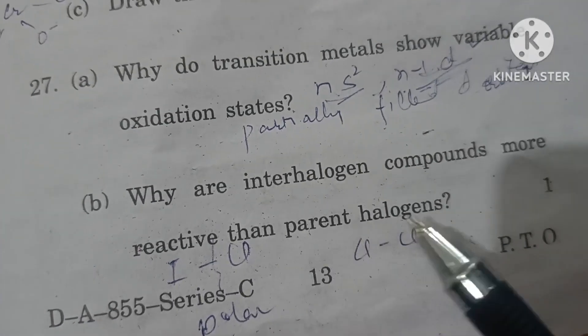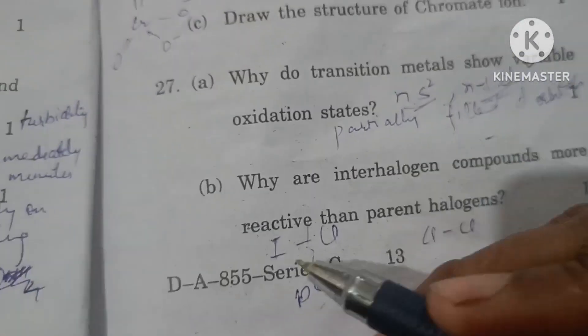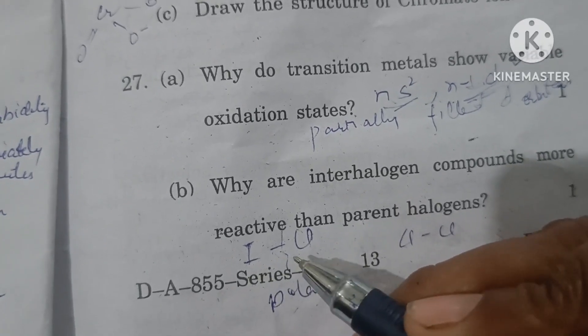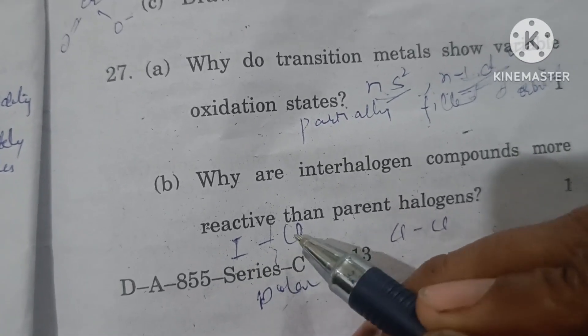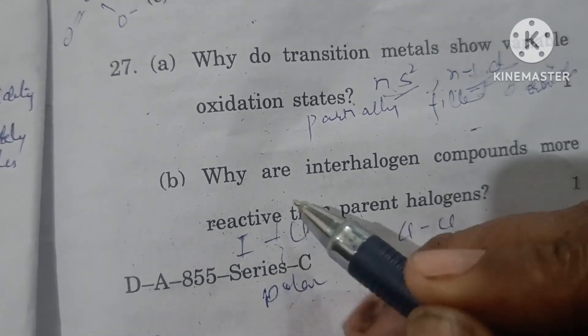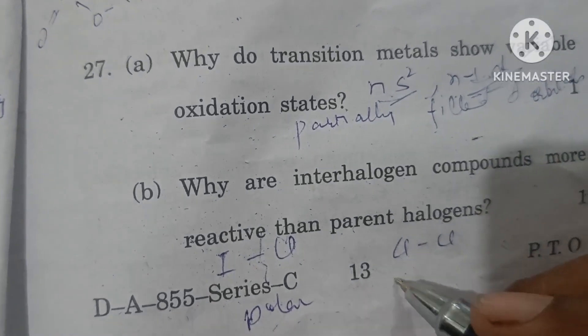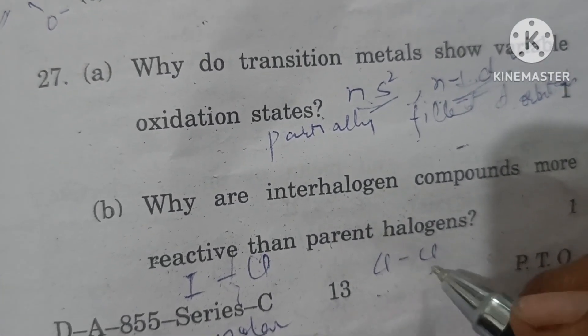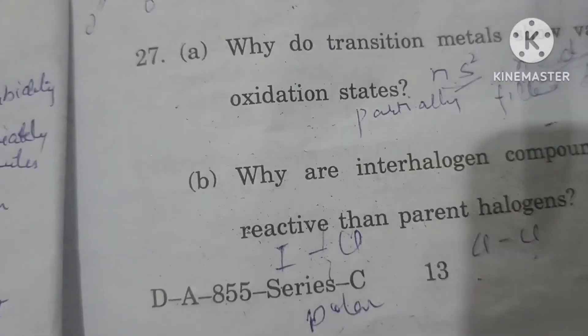Why are interhalogen compounds more reactive than parent halogens? Because interhalogen compounds are made of different halogen atoms with different electronegativities, the bond is polar and breaks easily, so they are more reactive. Whereas in halogens, same electronegativity atoms are attached, so the bond is harder to break and they are less reactive.